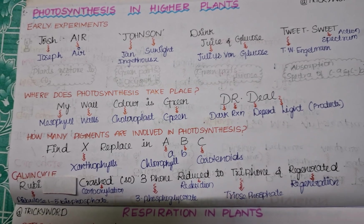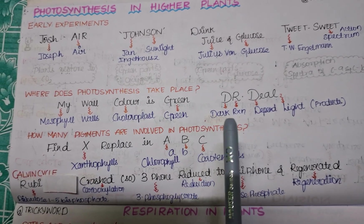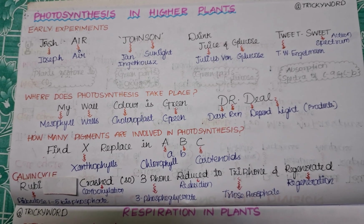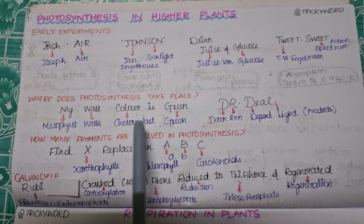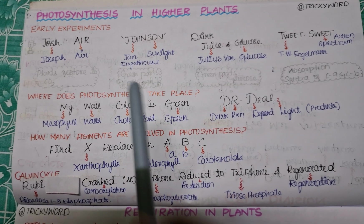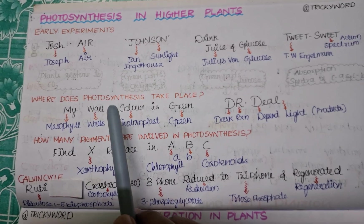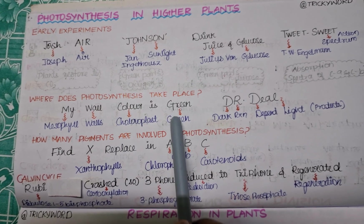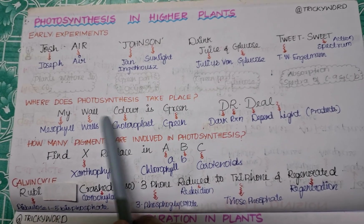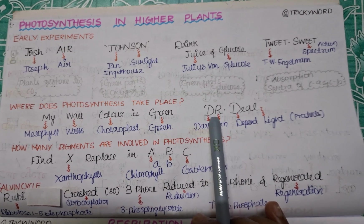Now, where does photosynthesis take place? The trick is 'My Wall Color Is Green.' Photosynthesis takes place in the green parts of the plants, due to the presence of chlorophyll in the chloroplast. The chloroplast is usually present in the mesophyll walls. So: 'My' = Mesophyll, 'Wall' = Wall/Chloroplast, 'Green' = Green color. Chloroplasts are generally present along the mesophyll walls, which is why those parts appear green.